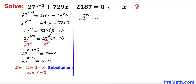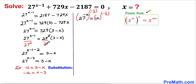Now let's raise both sides to the power of negative 1 over u. Applying the power rule of exponents on the left hand side, we multiply the nested exponents: negative u times negative 1 over u equals 1. So the left hand side becomes simply 27, and the right hand side becomes u to the power negative 1 over u.